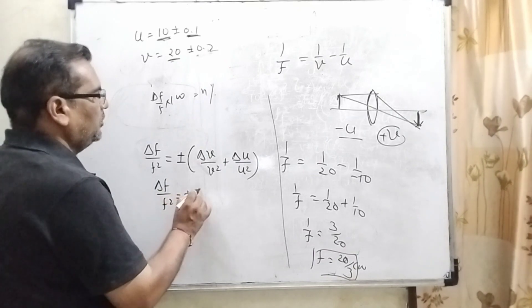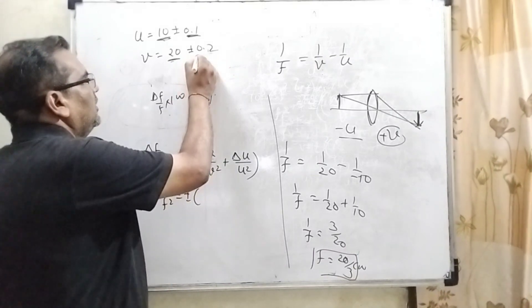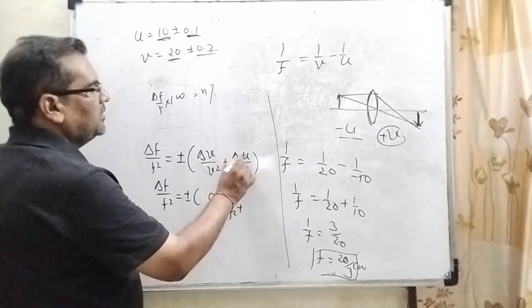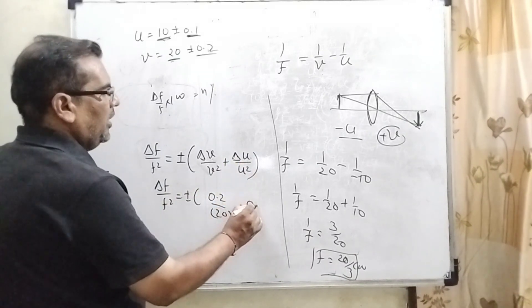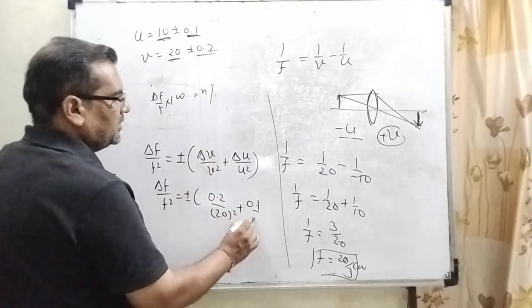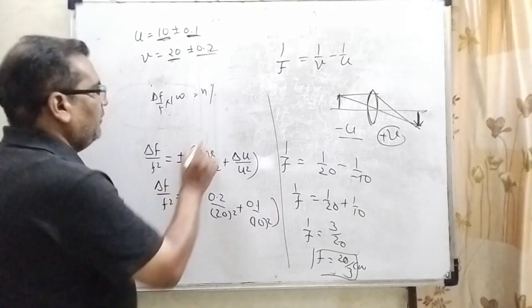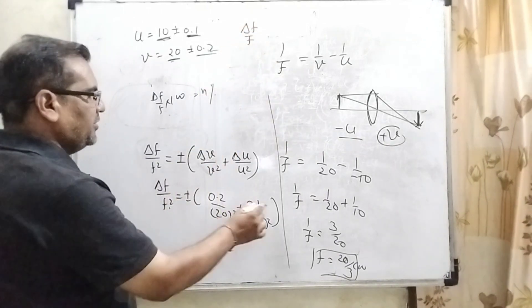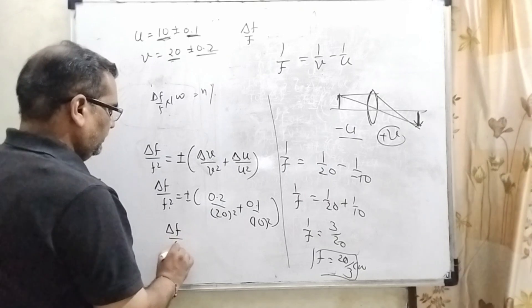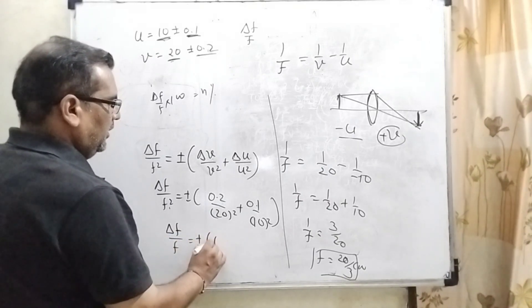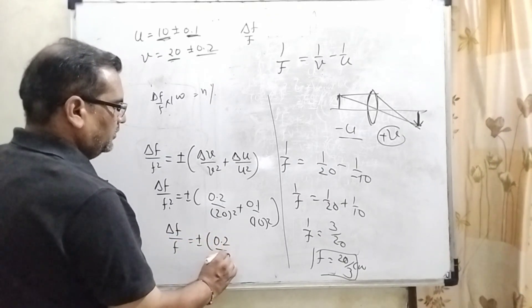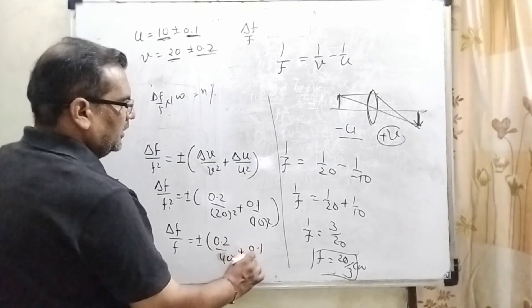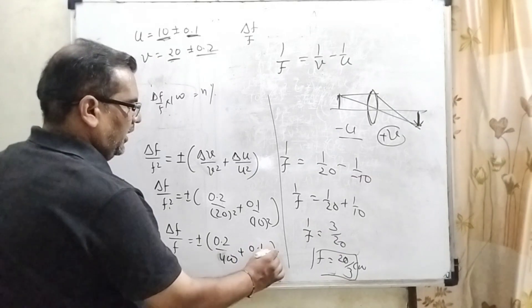Now substitute the values. Δv is 0.2 and v² is 400. Plus Δu is 0.1 and u² is 100. We have to find Δf/f, so one f shifts to the right side in multiply form.